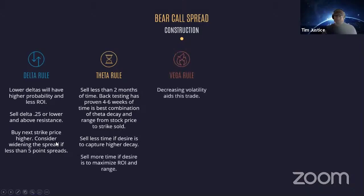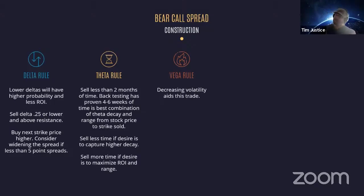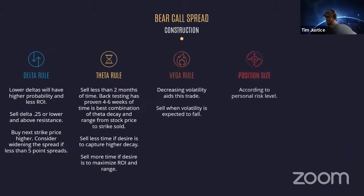The Vega rule: volatility falling helps the trade. It is not mandatory that you have a certain implied volatility relationship — this is more nuanced and for advanced traders. It gives you a little more edge and higher probability, but I'm not going to base this decision on volatility alone. Position size has to be according to risk level. In any credit spread, you can lose what you put in on margin, so you've got to understand that and keep those numbers relatively low relative to your account size.